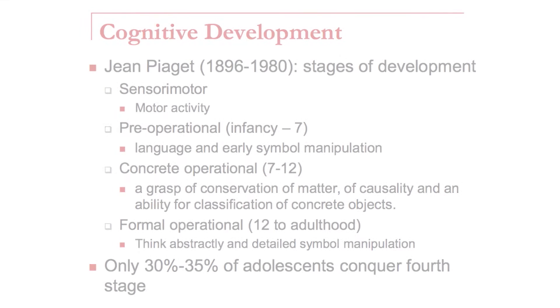Kramer discusses abstraction and the ability for humans to perform abstraction in terms of computing goals and knowledge by referring back to Piaget. He notes there were four stages of development in Piaget's hierarchy. The first two stages, from newborns to around age seven, dealt with motor skills, early language, and basic symbol manipulation. From seven to twelve, children grasp conservation of matter, causality, and classifying concrete objects. The next stage, formal operation from adolescence to adulthood, marked a deeper developmental ability including abstract thinking and detailed symbol manipulation.